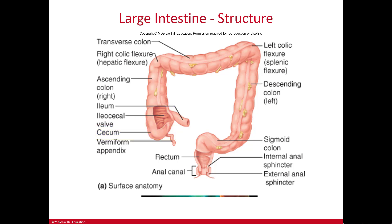At the end of that cecal pouch is a small tube called the vermiform appendix, which projects downward from the cecum. We don't really know what the purpose of the appendix is — you can live without it. Some argue it's left over from evolution; others argue it plays a role in the immune system, but we don't really know.